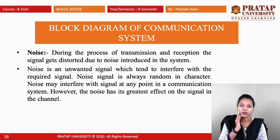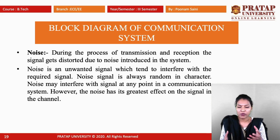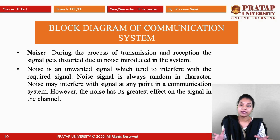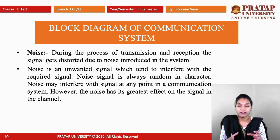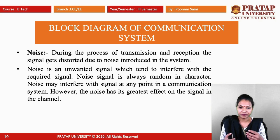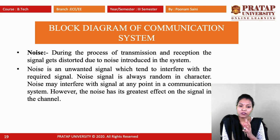During the process of transmission and reception, the signal gets distorted due to noise introduced in the signal. Noise is basically an unwanted signal which tends to interfere with the required signal. Noise signal is always random in character. Noise may interfere with the signal at any point in communication, and it has its greatest effect on the signal in the channel, causing the signal to get distorted.